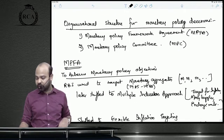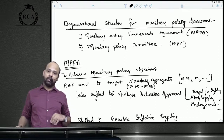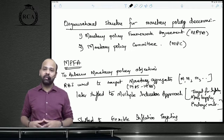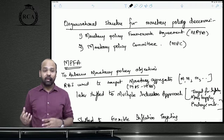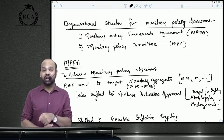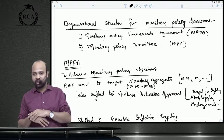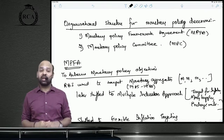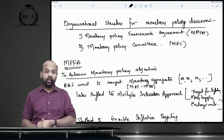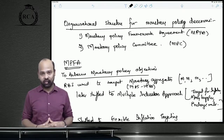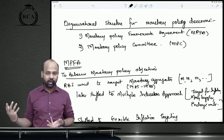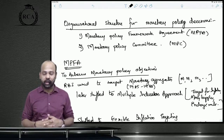The organizational structure for monetary policy decisions involves the monetary policy framework agreement (MPFA) and the monetary policy committee (MPC), both given statutory backing through an amendment to the RBI Act. Under the MPFA, the Government of India in consultation with the RBI decides an inflation target, which the RBI must achieve over five years to ensure price stability. Currently, the inflation target is 4% with a tolerance limit of ±2% (lower limit: 2%, upper limit: 6%). If inflation remains above 6% or below 2% for three consecutive quarters, monetary policy is deemed to have failed. The RBI must publish a monetary policy report every six months. Previously, a multiple indicators approach was used; now RBI follows a flexible inflation targeting approach.